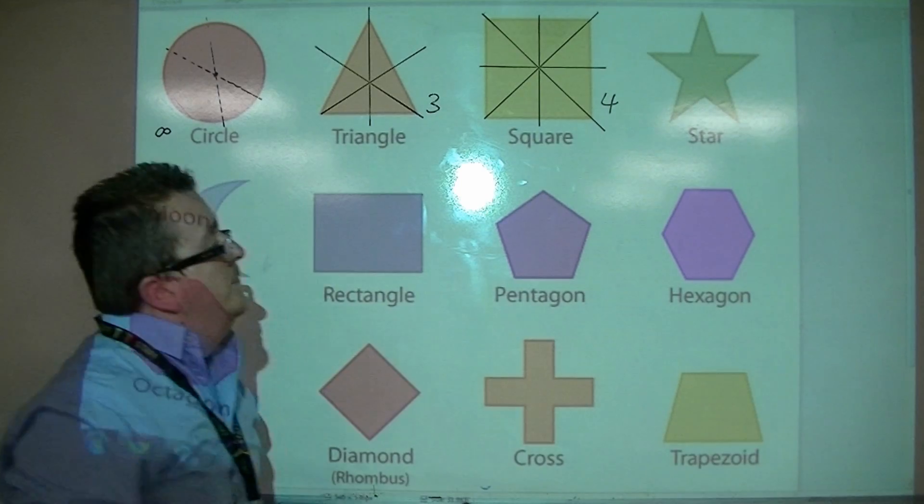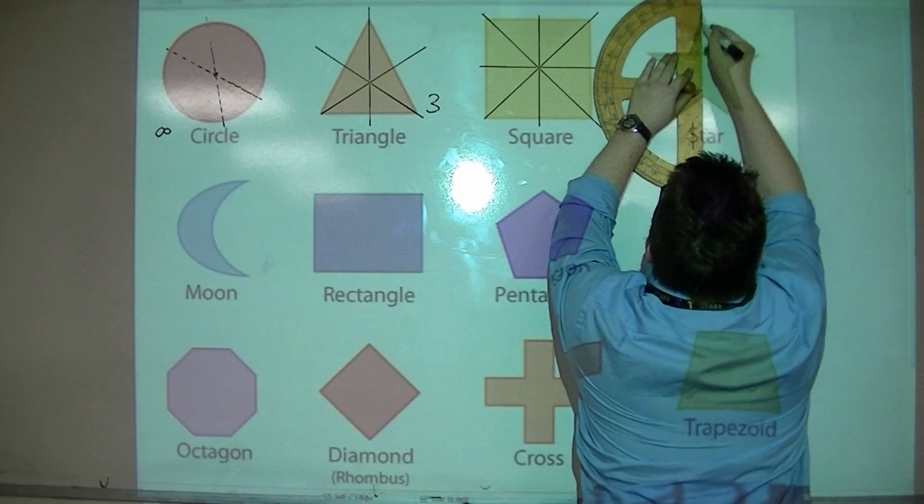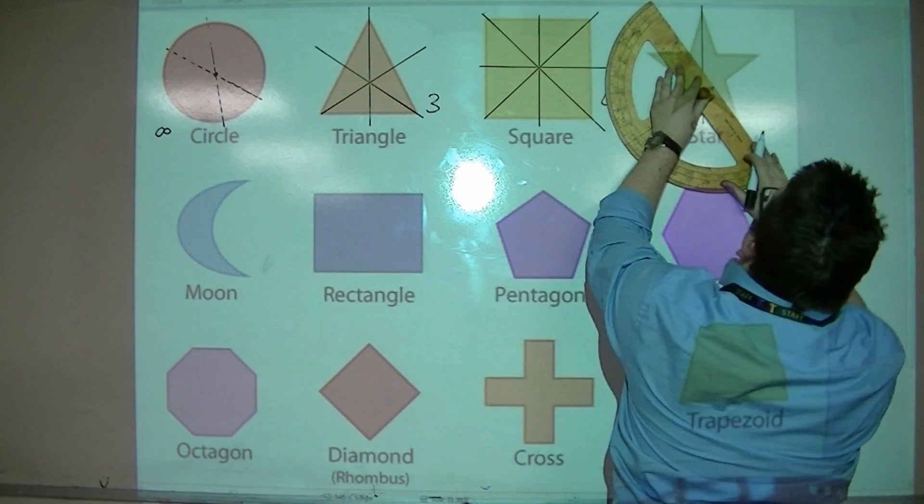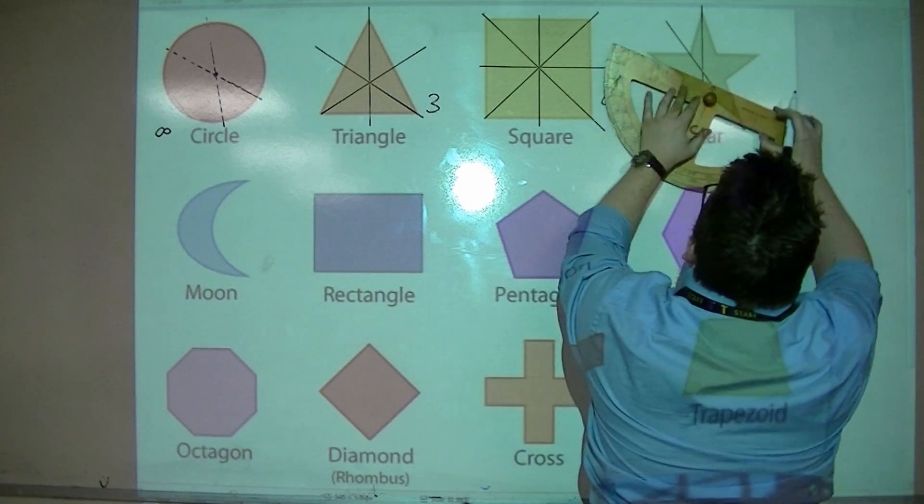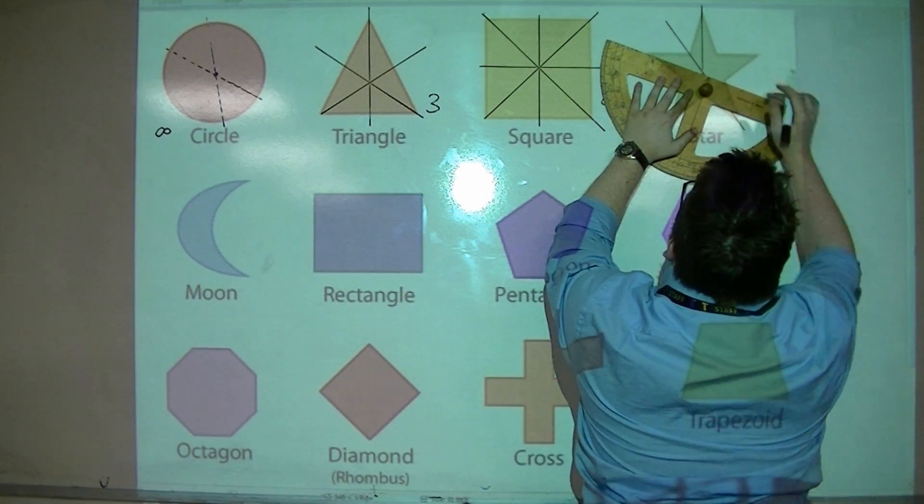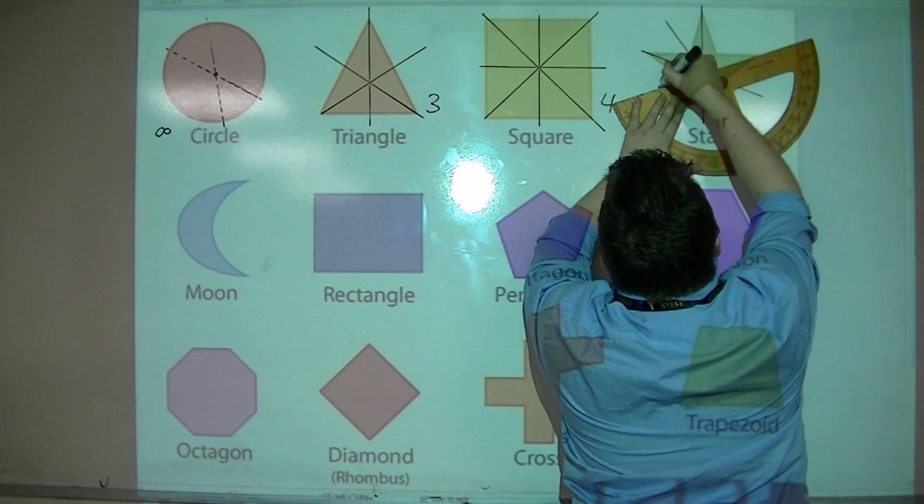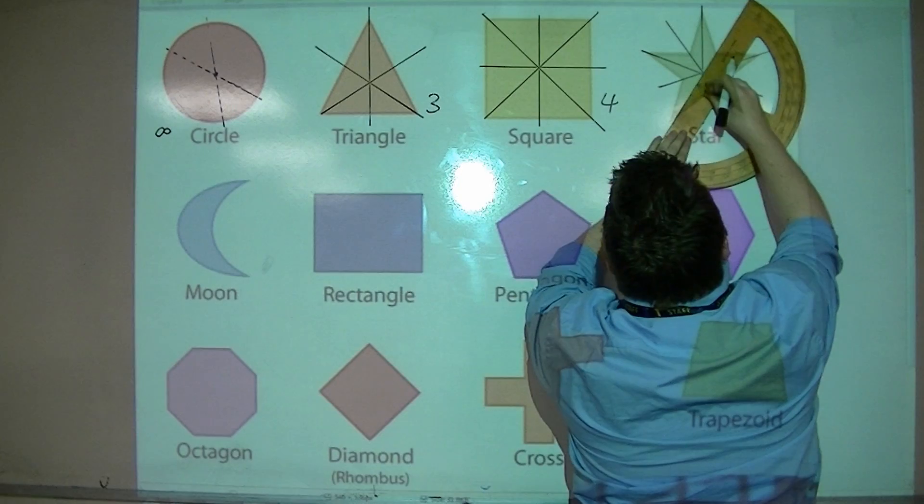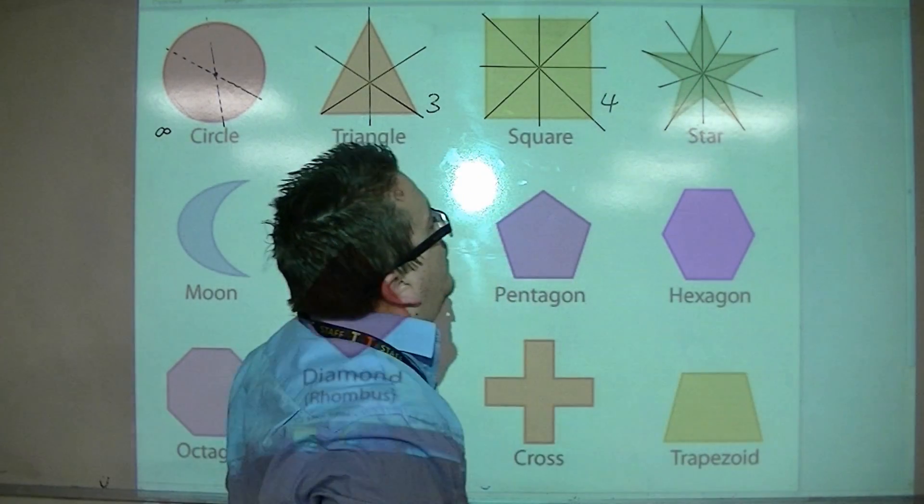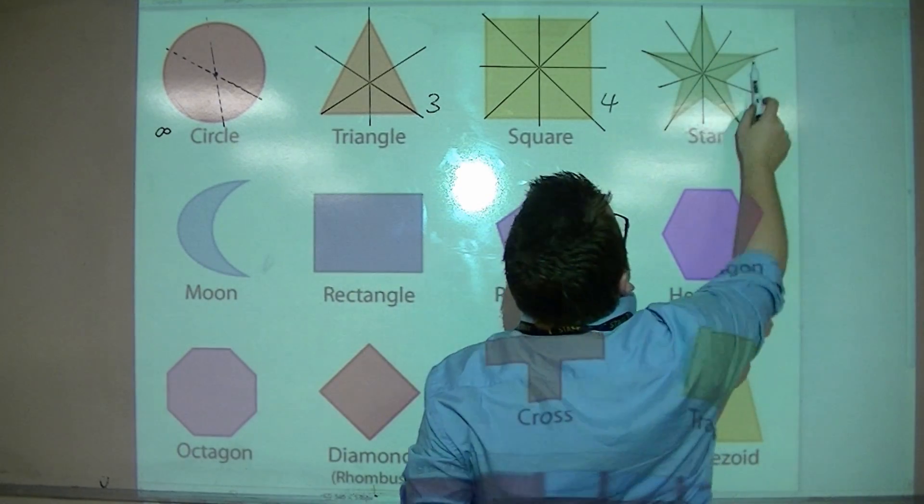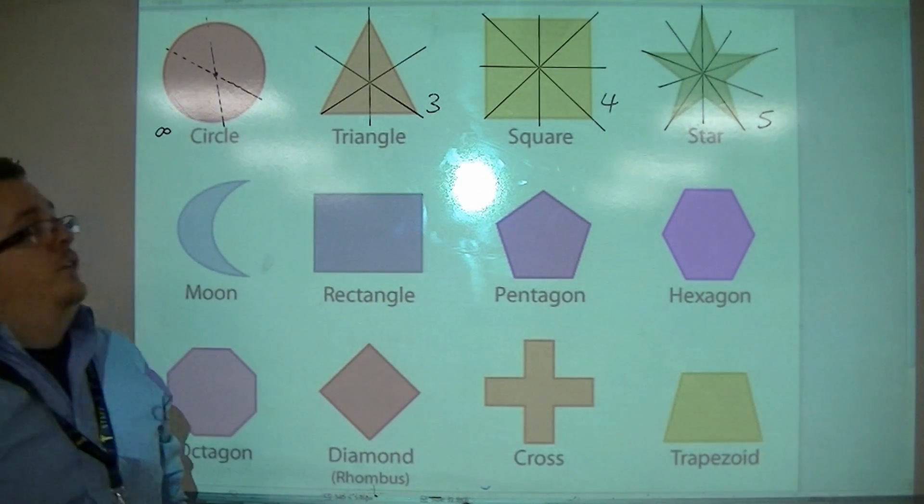Let's look at the star. The star, you could cut it down the middle, then you could cut it through that way, or you could cut it through that point there, or you could cut it through that point there. Or through that point there. So actually, counting up those lines, we have one, two, three, four, five. So five corners, five points, five lines of symmetry.